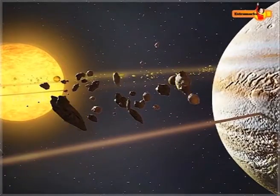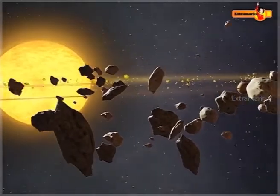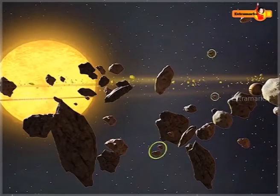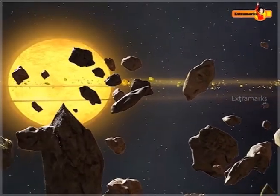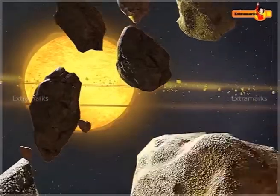Some asteroids are very large in size, about several hundred kilometers, and some are small like pebbles. Asteroids are very similar to planets and they are visible only when they reflect light from the Sun.